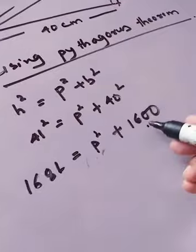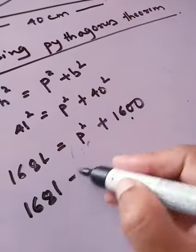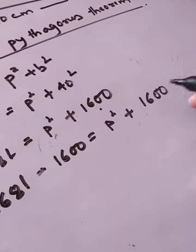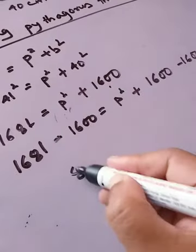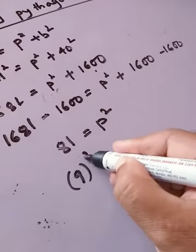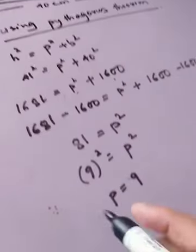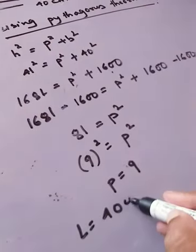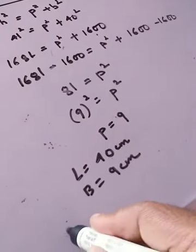We subtract 1600 from both sides. This cancels out, and the answer will be P squared equals 81. Since the square root of 81 is 9, the breadth is 9 centimeters.